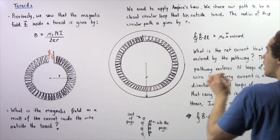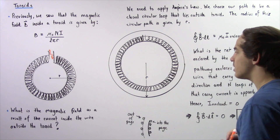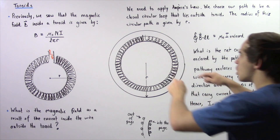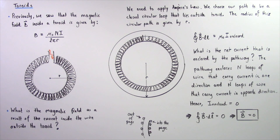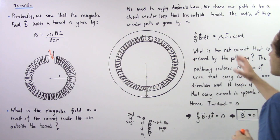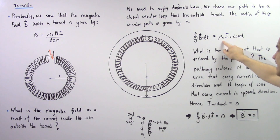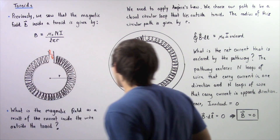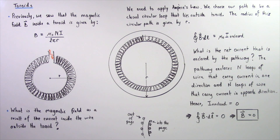This is our chosen path of integration. The radius of this circular path is given by R. Notice we could have also chosen our path to lie inside the hollow region — the result would be exactly the same. By Ampere's Law, the closed integral of B·dL equals mu naught times the enclosed electric current. Let's begin by asking: what exactly is the net electric current enclosed by our chosen pathway?